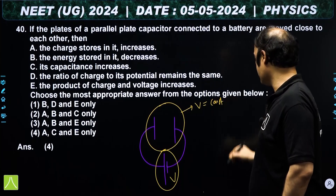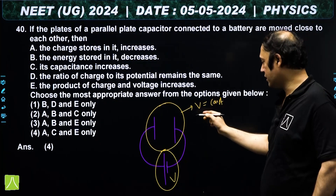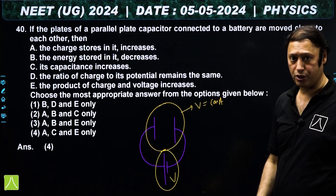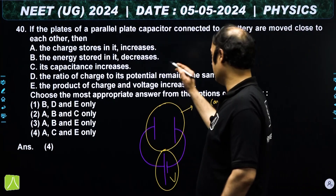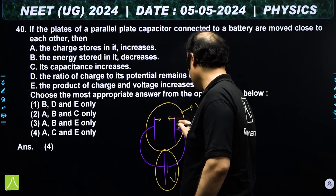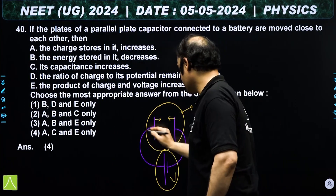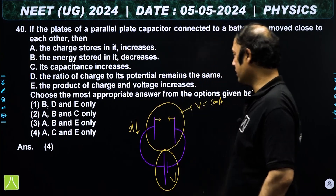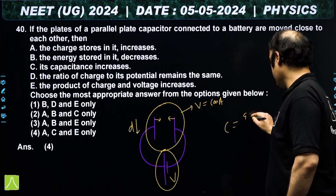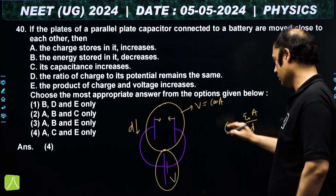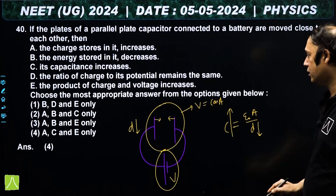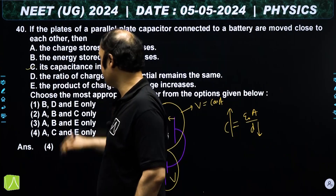Question 40: a capacitor is connected to a battery, so the potential difference V remains constant. We now change the distance between the plates. Capacitance C = ε₀A/d — as distance increases, capacitance decreases inversely proportionally.